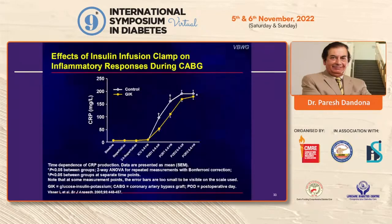Visser et al. in Holland repeated this experiment in patients undergoing cardiac surgery and again demonstrated that with infusion of insulin, CRP levels were reduced.